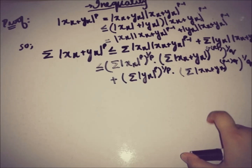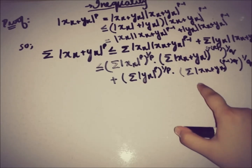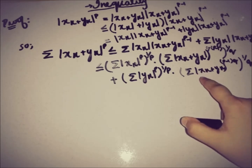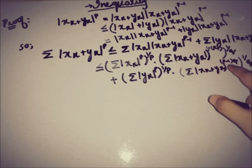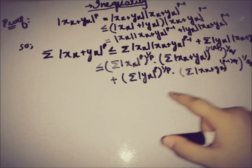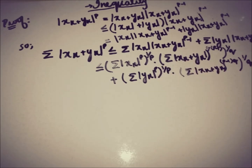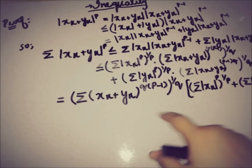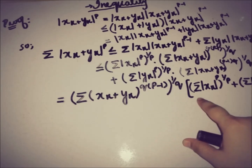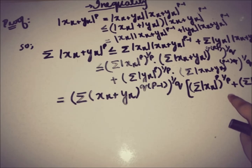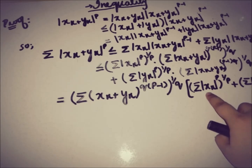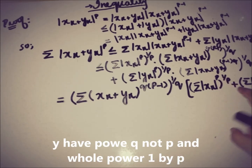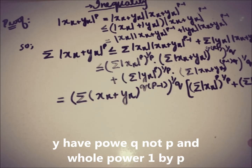Now it is time for manipulation. We factor out the common term: the sum of |xk + yk|^(Q(P−1)) whole to the power 1/Q. Inside we have the sum of |xk|^P whole to the power 1/P, plus the sum of |yk|^P whole to the power 1/P.